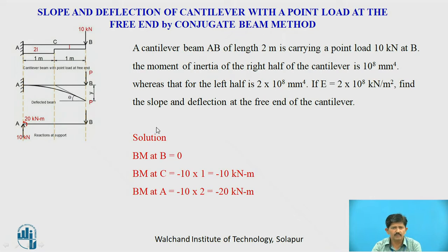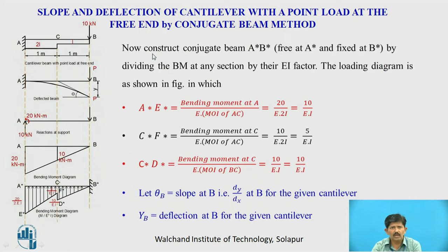First, we find the bending moments. The bending moment at B is zero. The bending moment at C is 10×1 = −10 kN·m. The bending moment at A is −10×2 = −20 kN·m. Now we construct the conjugate beam by converting the end conditions: the fixed end becomes free in the conjugate beam, and the free end of the real beam becomes fixed in the conjugate beam.